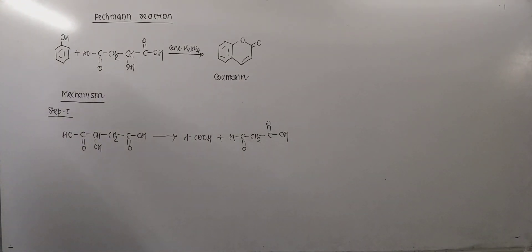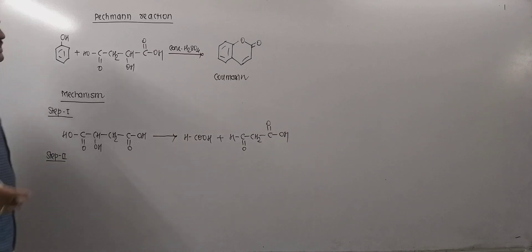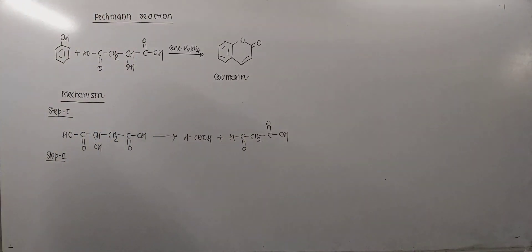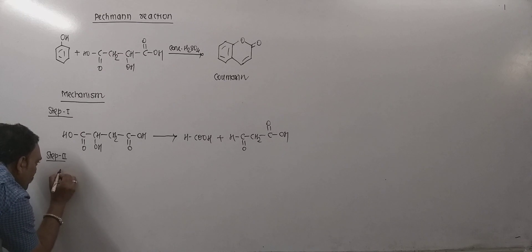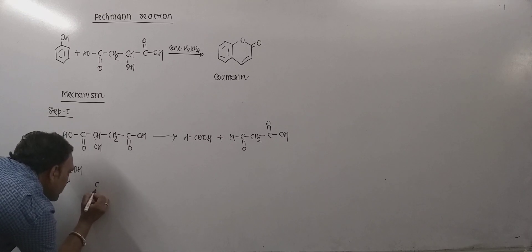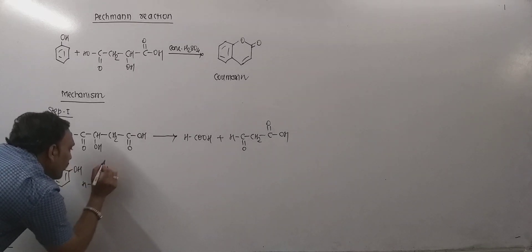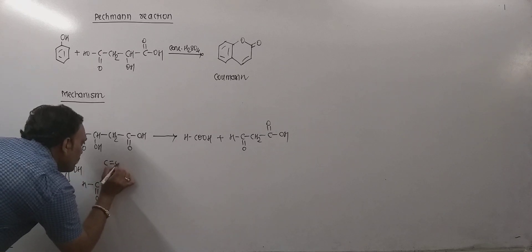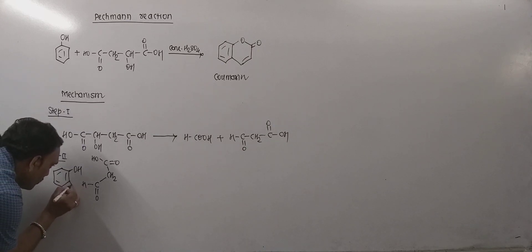In the next step, in second step which happens to be very crucial, this malonaldehyde acid obtained in first step gets condensed with our phenol. The phenol can be given as shown. This malonaldehyde acid can be mentioned as shown.